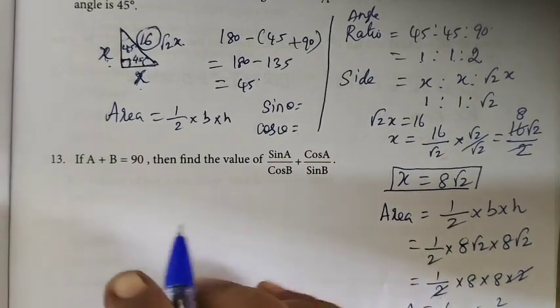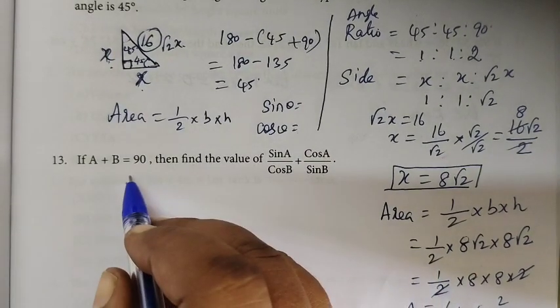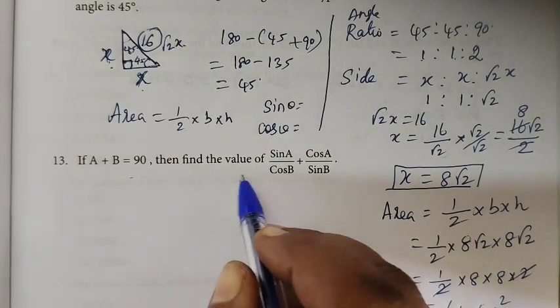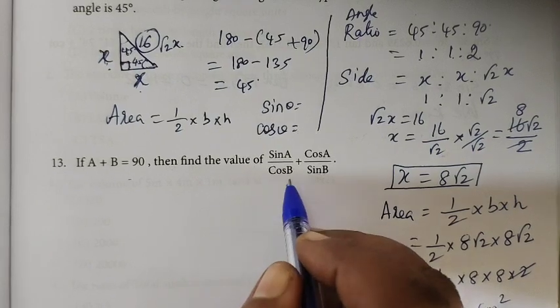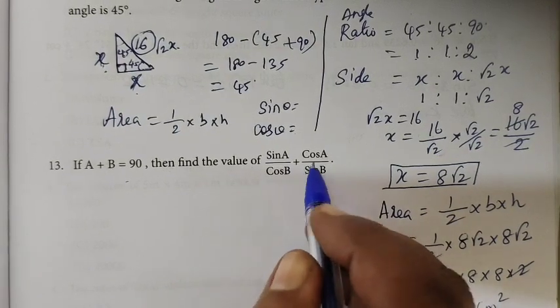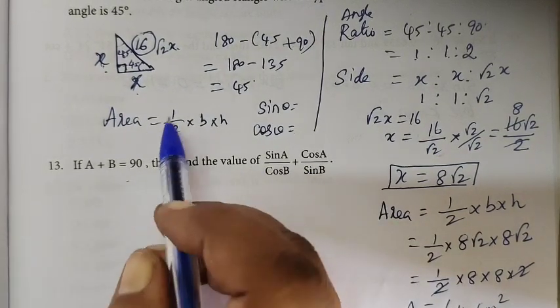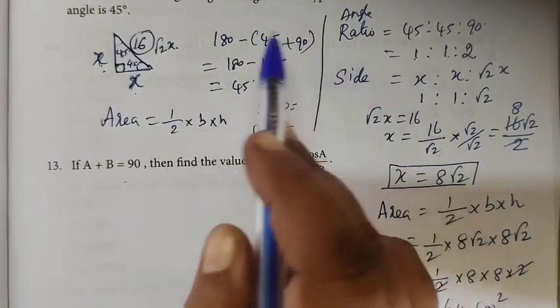If a plus b is equal to 90 degrees, then find the value of sin a cos b plus cos a sin b.